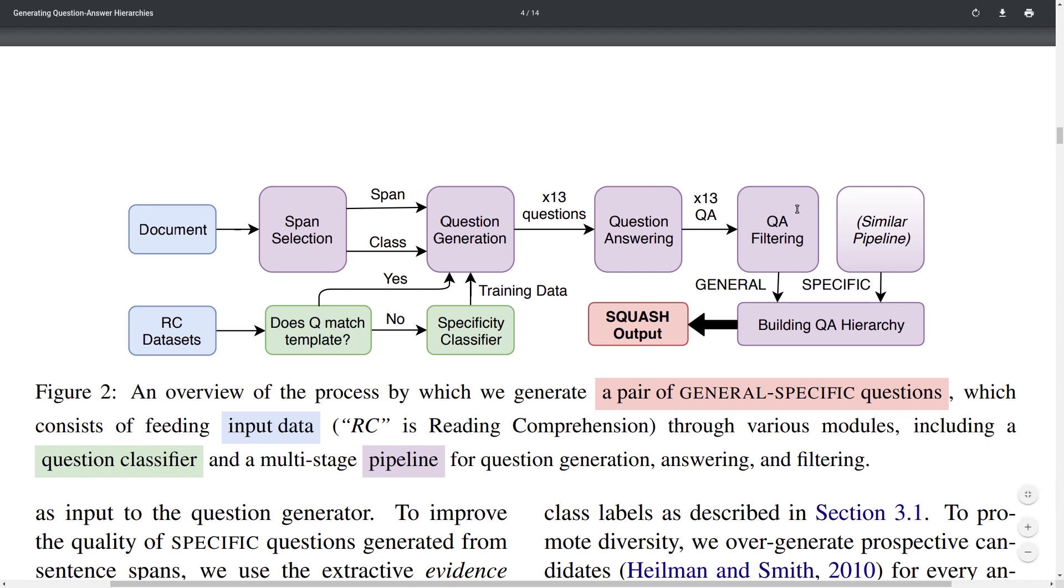You're also going to have a question-answer filtering step which will remove questions and answers which might be too low quality to be included. There's one pipeline of this question generation and answering for the general case when you want to generate general questions, as well as for the specific case. And so using those they can build this question-answer hierarchy which is the output of the system.